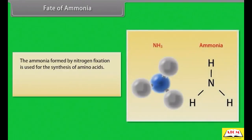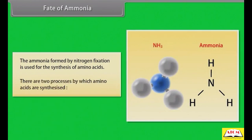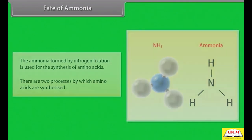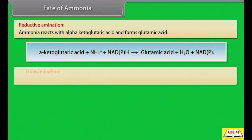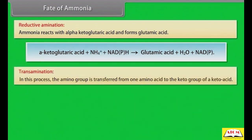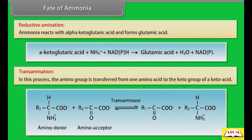Fate of ammonia: the ammonia formed by nitrogen fixation is used for the synthesis of amino acids. There are two processes by which amino acids are synthesized. Reductive amination: ammonia reacts with alpha-ketoglutaric acid and forms glutamic acid. Transamination: in this process, the amino group is transferred from one amino acid to the keto group of a keto acid.